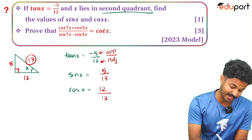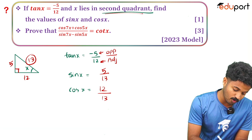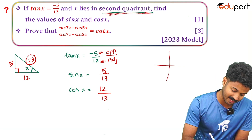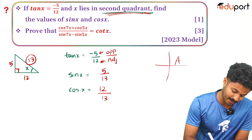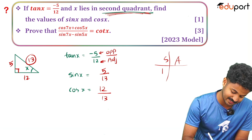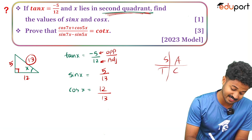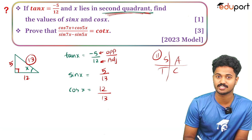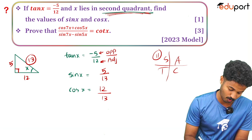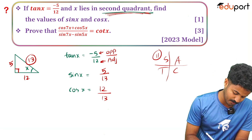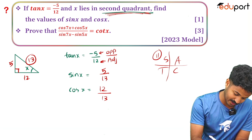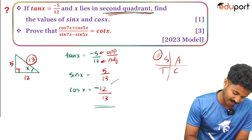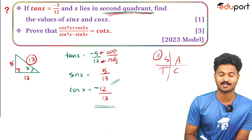Since x is in the second quadrant — using the ASTC rule — sin is positive but cos is negative in the second quadrant. So sin x = 5/13 and cos x = −12/13.